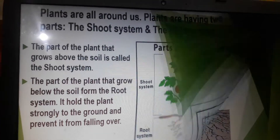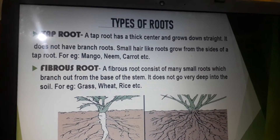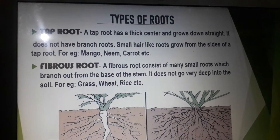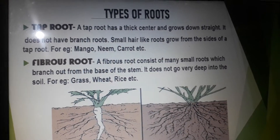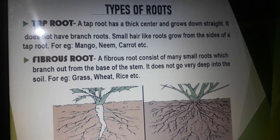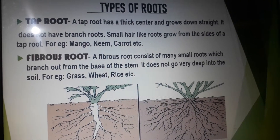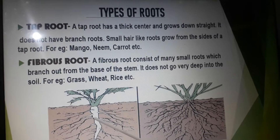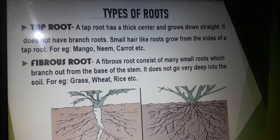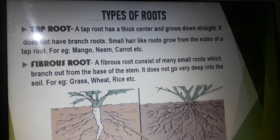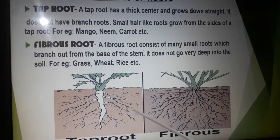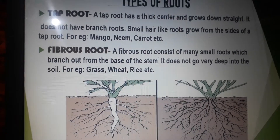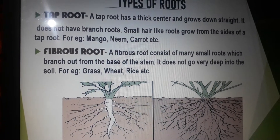Roots are of two types: taproot and fibrous root. A taproot has a thick center and grows straight down. It does not have branch roots. Small hair-like roots grow from the sides of a taproot.